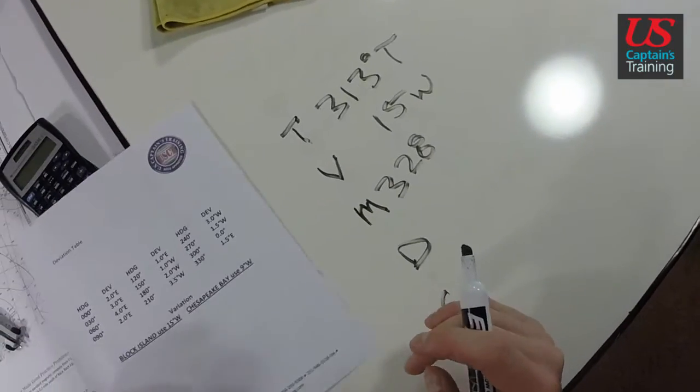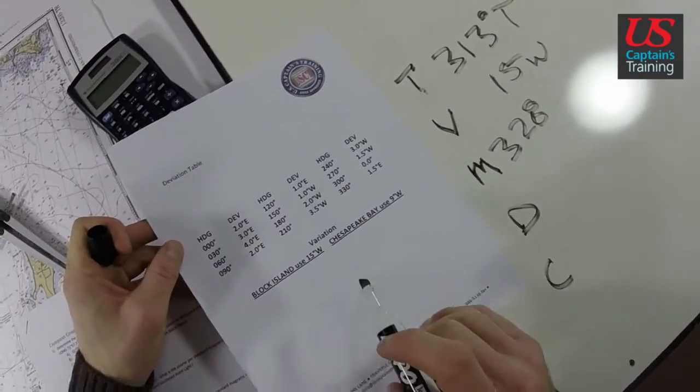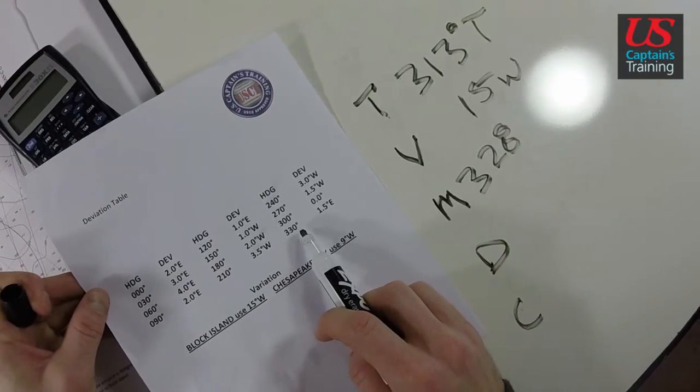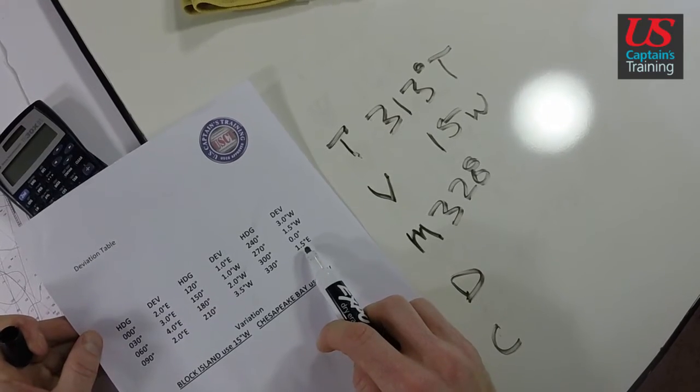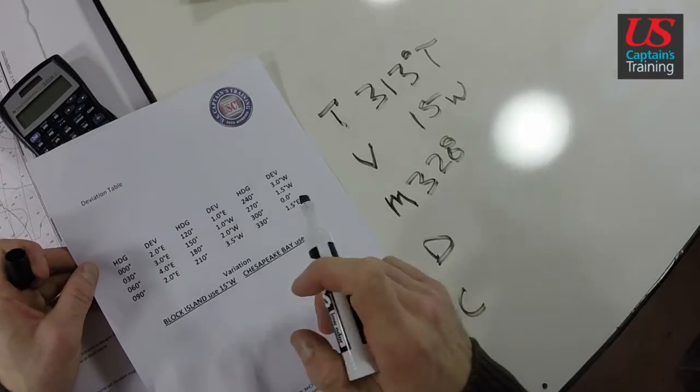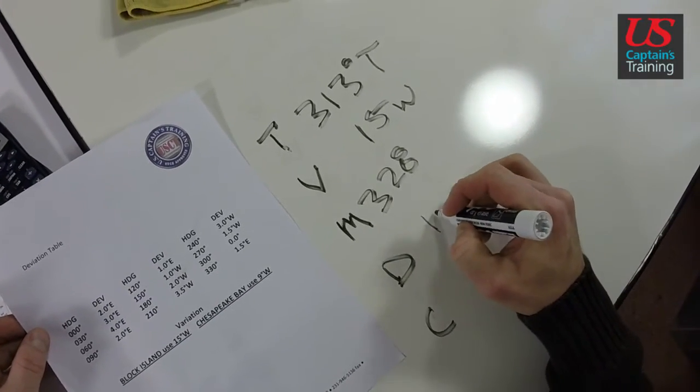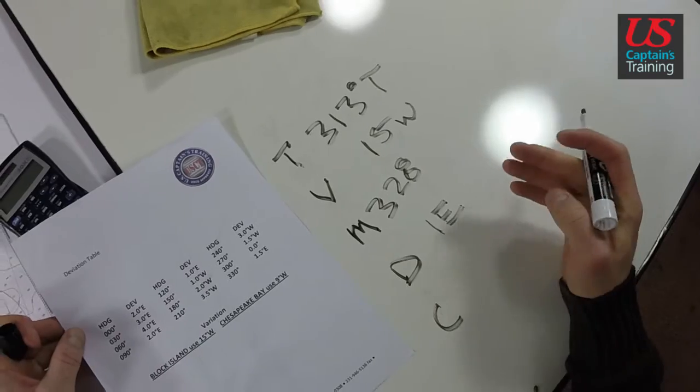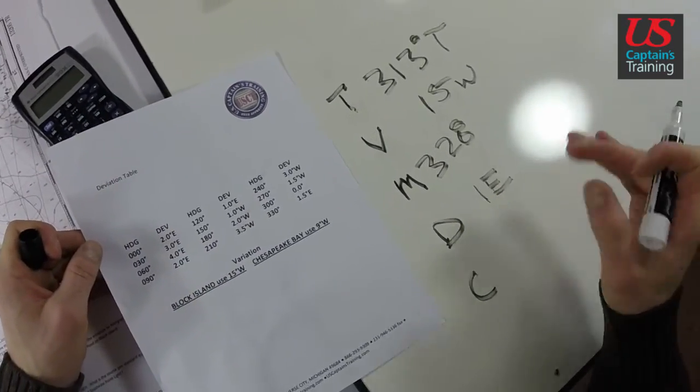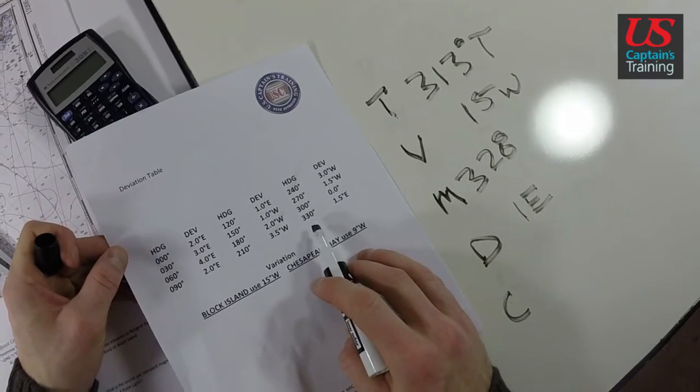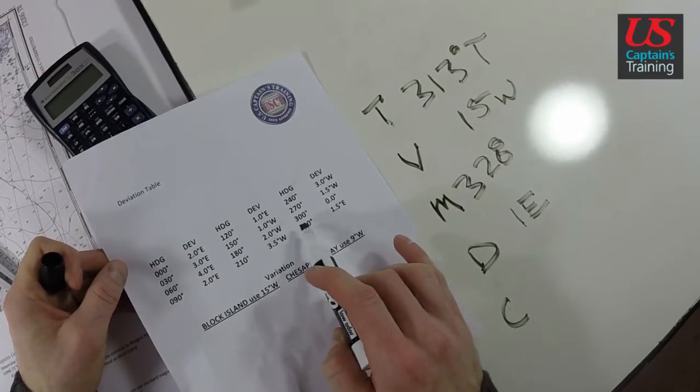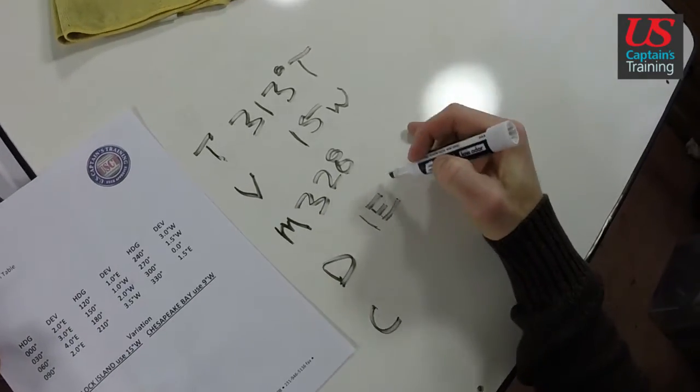Now we look at our deviation table, and we see 328 is very close to 330, which is 1.5 east. Now I am going to round this. See how it's less than 330? I'm just going to use 1 east, because you'll end up rounding at the end of the problem anyway. If it was over 330, I would use 2 east. But I'm under 330, so I'm going to use 1 east. And we're going down, so we subtract: 327 degrees P.S.C.